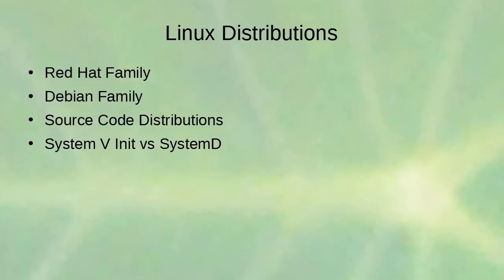In the Linux world there are many different families of distributions. You have the Red Hat family, the Debian family, and source code distributions. There's also an ongoing debate about switching from init to systemd — most distributions have switched to systemd, but some still use the old init system.